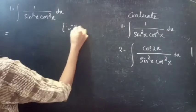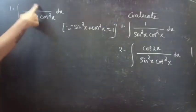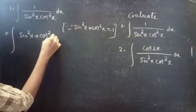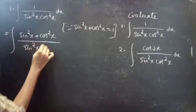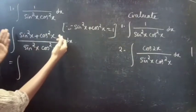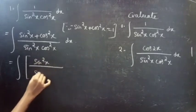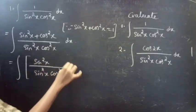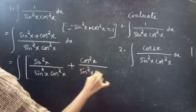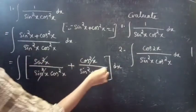Since we know that sin²x + cos²x = 1, we can replace 1 in the numerator with sin²x + cos²x. So we get the integral of (sin²x + cos²x) divided by (sin²x · cos²x) dx. Since the numerator has two terms, we can split this into two fractions: sin²x/(sin²x · cos²x) + cos²x/(sin²x · cos²x) dx. Here sin²x cancels in the first term and cos²x cancels in the second term.